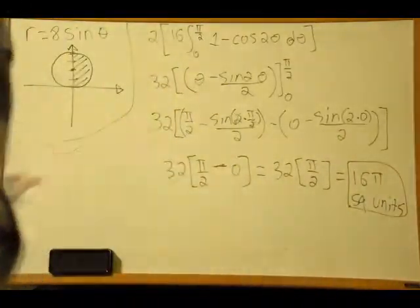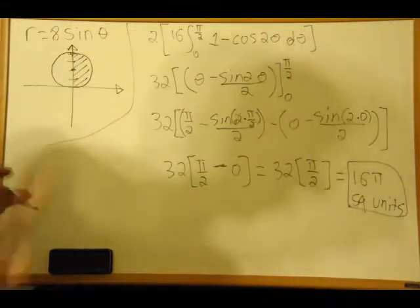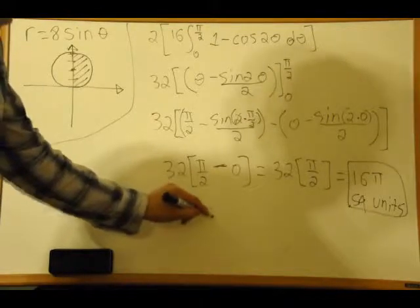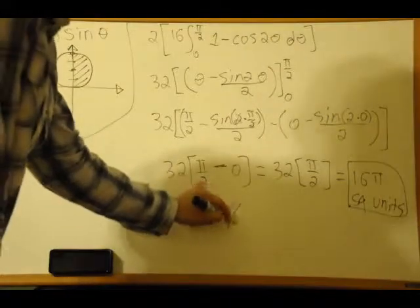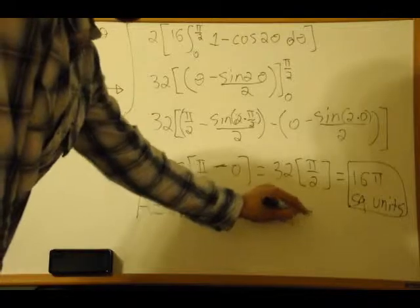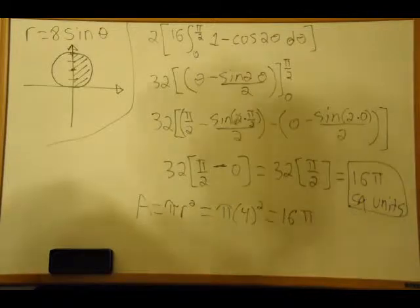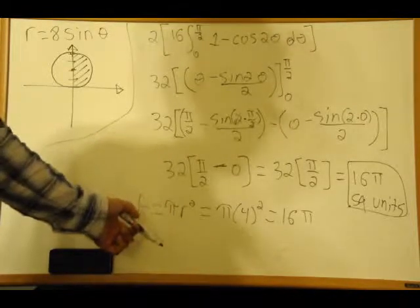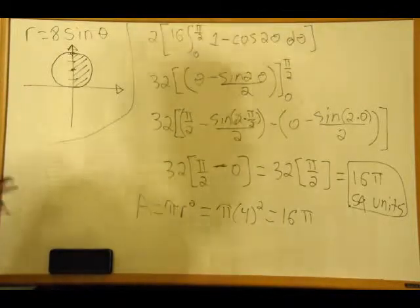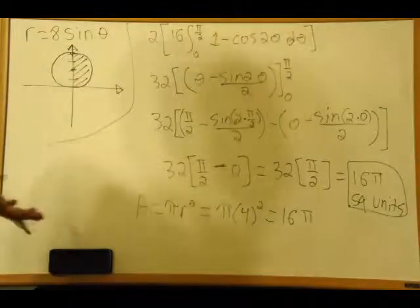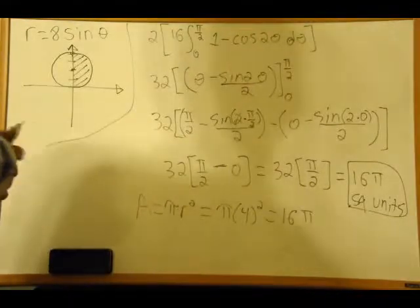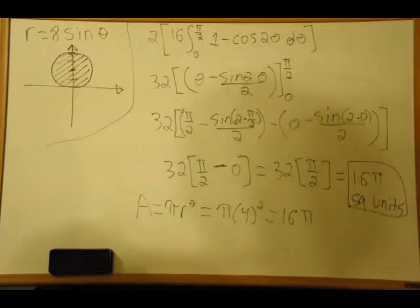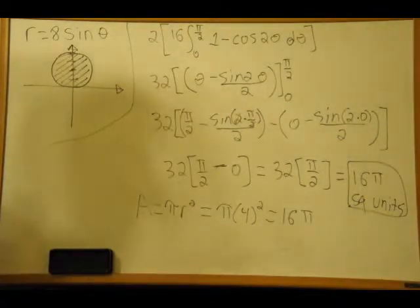Now, if you think about what you learned in pre-calculus — the area of a circle is π r squared. With r equal to 4, that gives 4 squared times π equals 16π square units. So we used calculus to figure out something that you learned a long time ago with a simple formula. Calculus is very powerful, and it's more interesting to do it the calculus way, but as you can see with A equals π r squared, it's all the same thing. This whole circle is 16π square units. I hope you all learned something, and I'll see you in a future video.